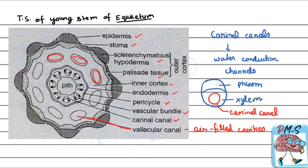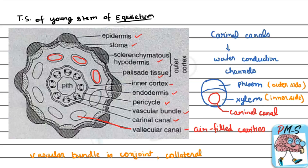The vascular bundle is conjoined and collateral — xylem and phloem are on the same radius. Phloem is on the outer side and xylem towards the inner side. So this is a collateral vascular bundle. Equisetum is similar to Calamites and is our living, or extant, genus.